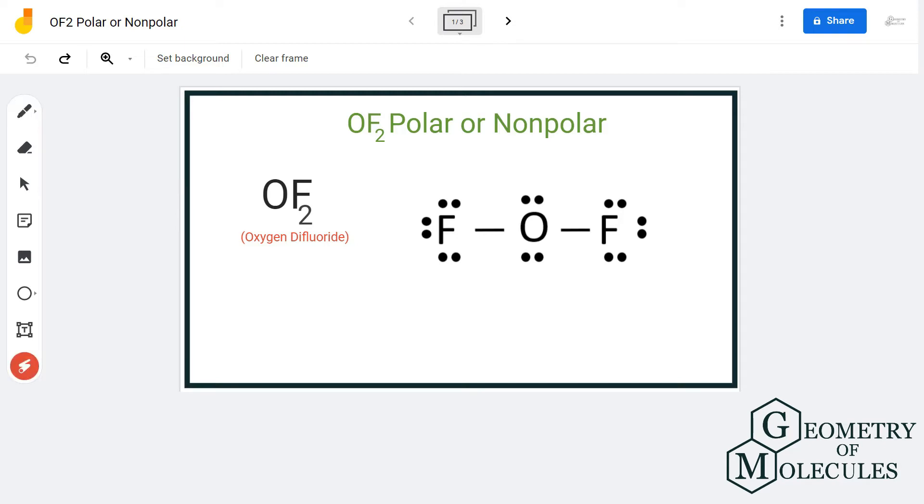Here is the Lewis structure of the molecule in which the oxygen atom is in the center and fluorine atoms are on the outside. To see if these bonds are polar or non-polar, we will check the difference of electronegativities for both these atoms.